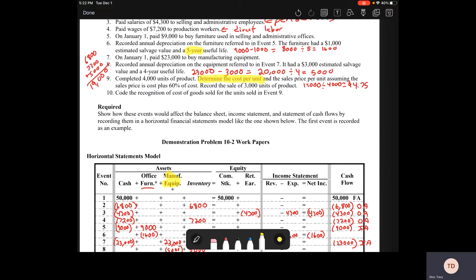Now they tell us that the sales price is the cost plus 60%. So we've got to take that $4.75 times 0.6 to get the 60%. That should be $2.85. So then when you take $4.75 plus, not times...